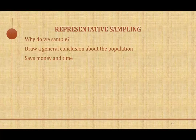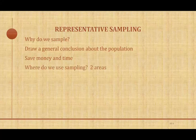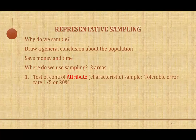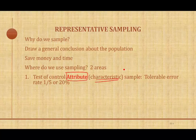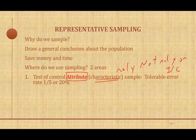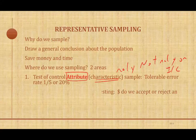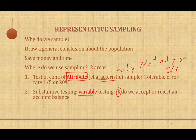We use sampling in two different areas. One area is the test of controls, which we call attribute sampling or characteristic sampling. Here we want to know if we should rely or not rely on internal controls. We set some tolerable error — for example 20%, or one in every five of the population — checking if controls are applied correctly: yes or no. We also do sampling when we examine dollar amounts. This is called substantive or variable testing, where we determine whether to accept or reject the dollar amount in an account balance.